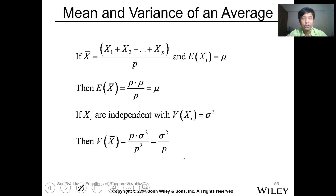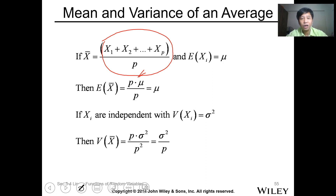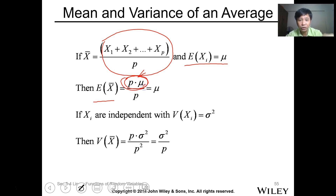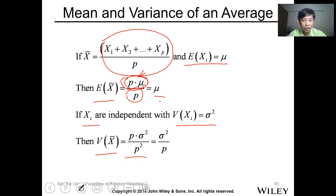Mean and variance of an average value: if x-bar equals the mean, which is the summation of x1 to xp divided by p (the total number of variables), and the expected value of each xi is mu, then the expected value of x-bar equals mu. If the xi's are independent, the variance of x-bar equals sigma squared over p.